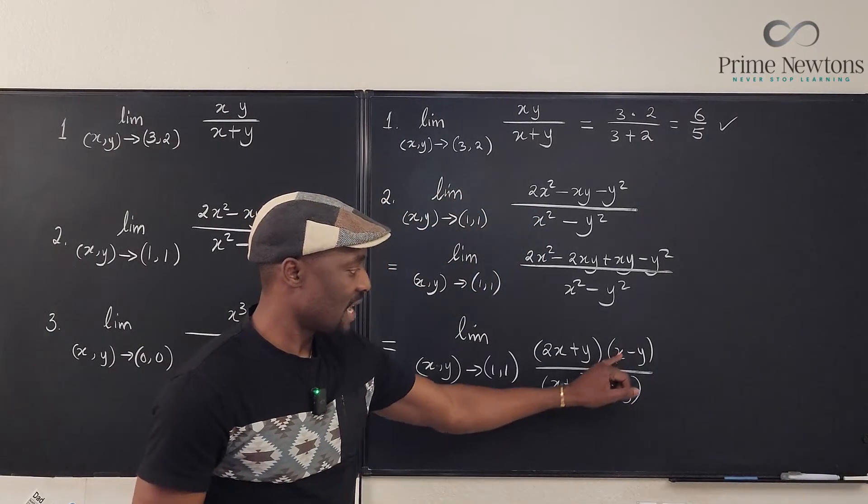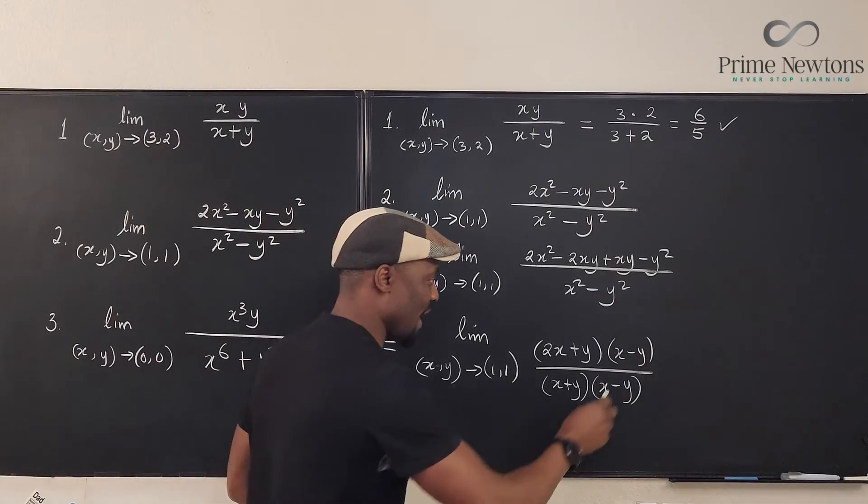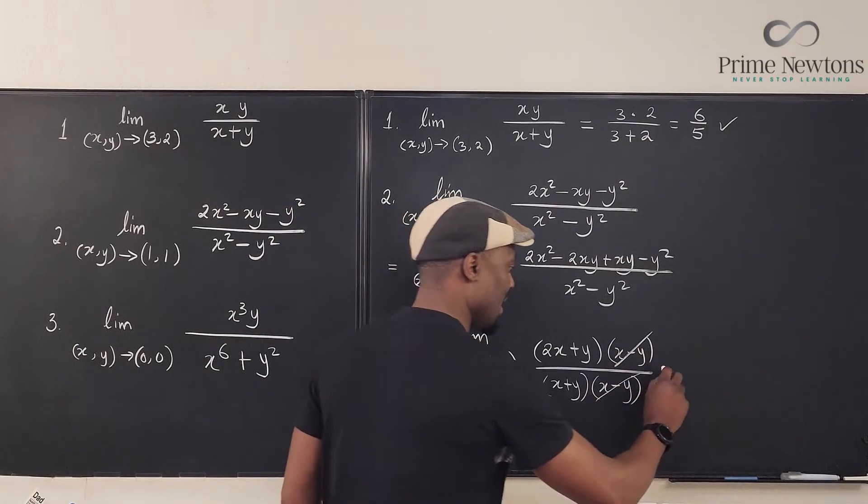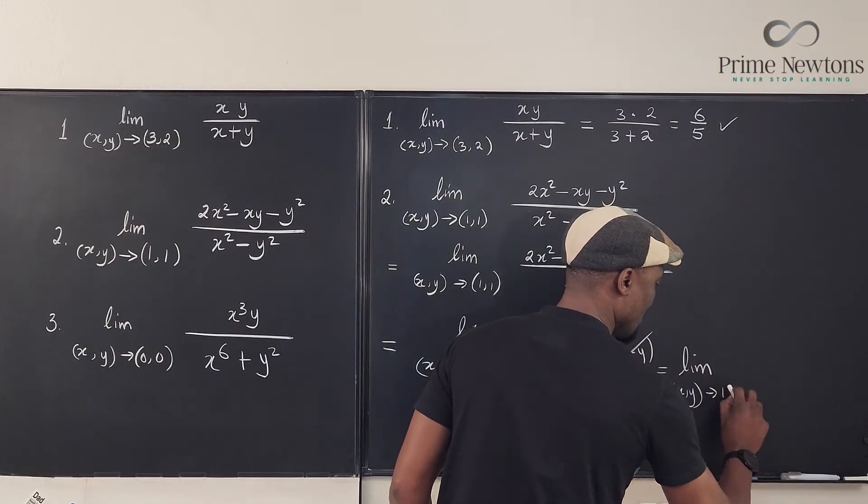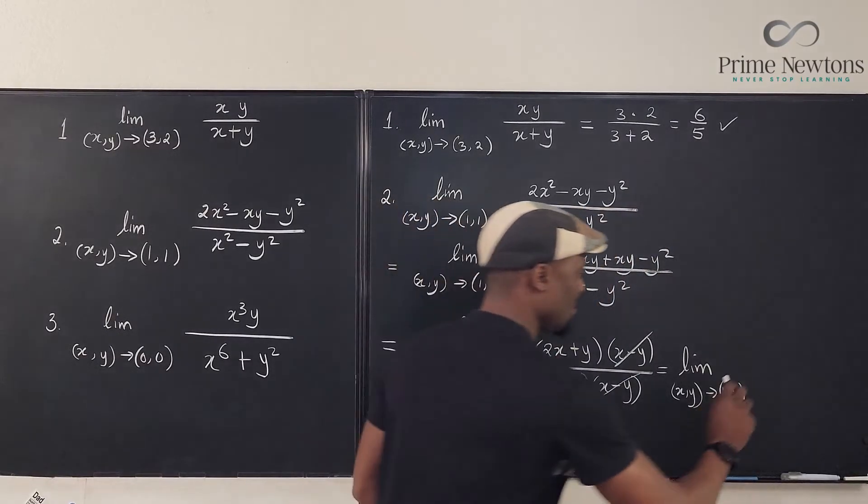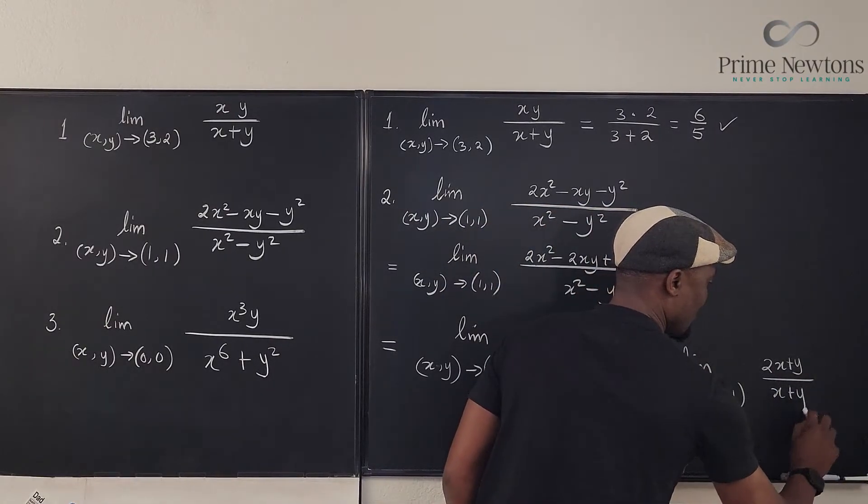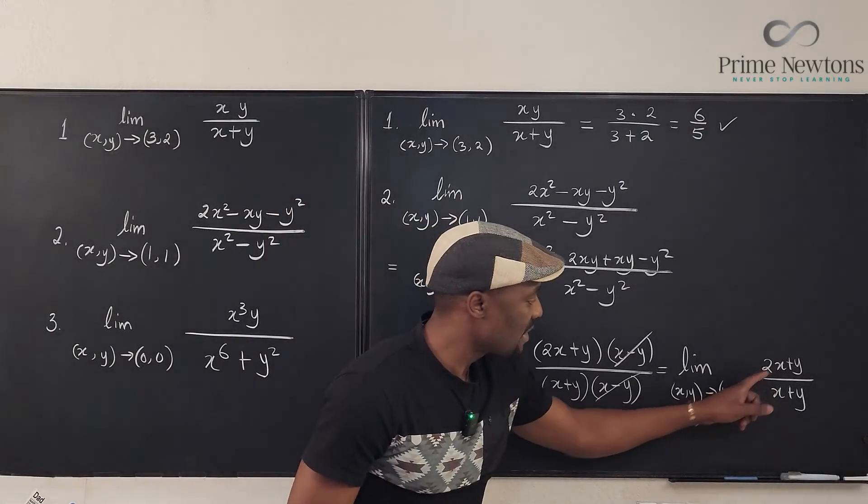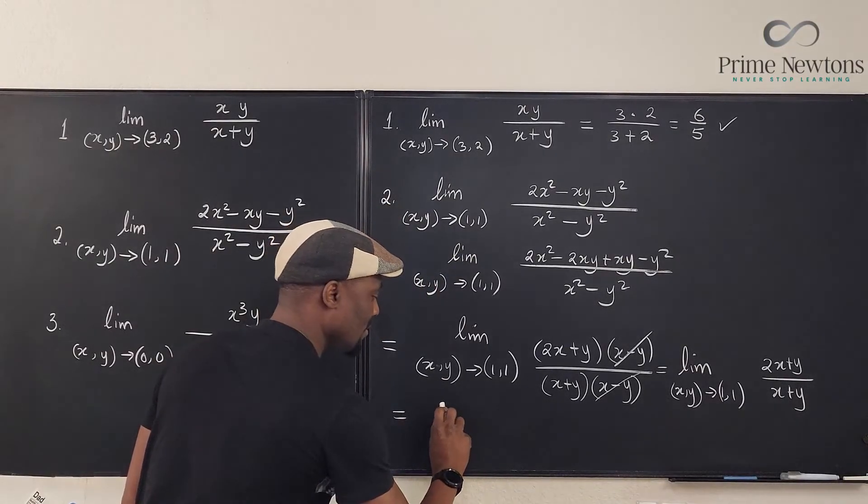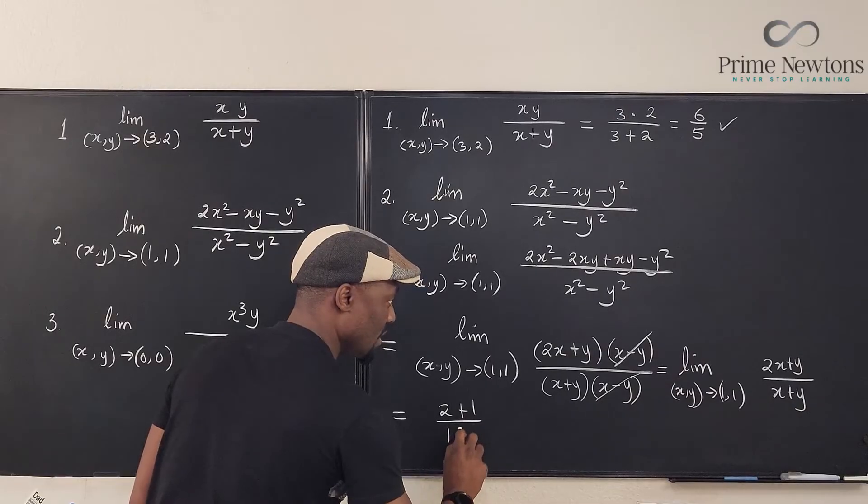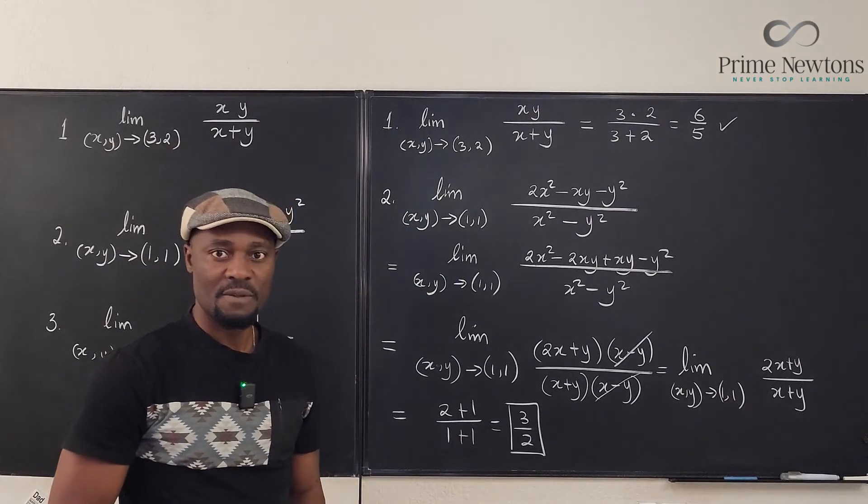Okay, so clearly, this can cancel this out. So you see that the toughest part of this is just factoring, which is an algebra skill. So if we take this out, what we have left is going to be the limit as the point (x,y) approaches (1,1) of 2x plus y divided by x plus y. Well, we can easily plug in our 1 for x, 1 for y. We're going to end up with 2 plus 1 over 1 plus 1, which is 3 over 2. So the limit of this is 3 halves.